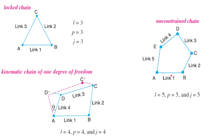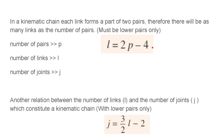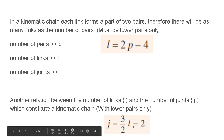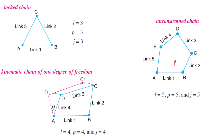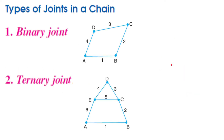Then we have an unconstrained chain: five links, five joints, and five pairs. When we put l, p, and j into the formula, LHS is less than 2p − 4 and LHS is less than RHS in the joints relation. Hence the chain is not constrained enough — there are more joints and the relative motion is not completely constrained, so there is more than one degree of freedom available.